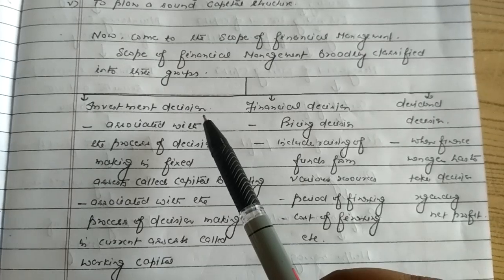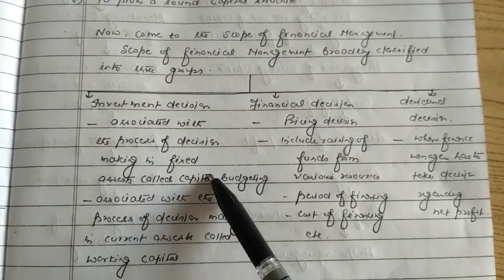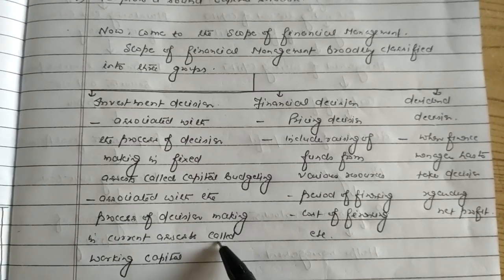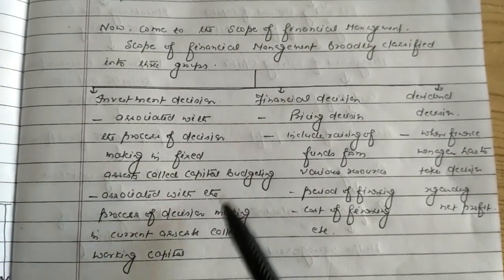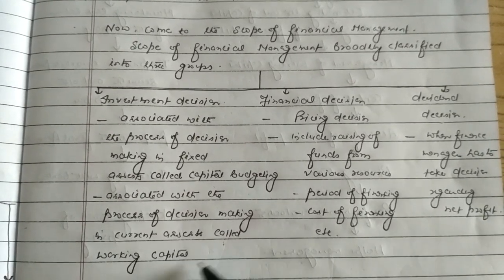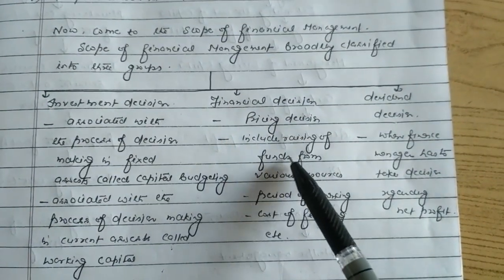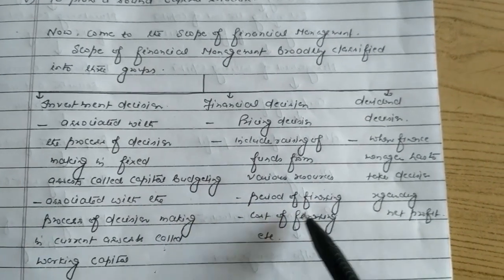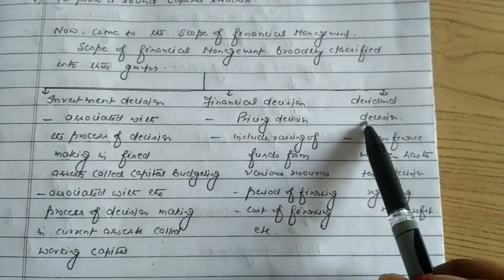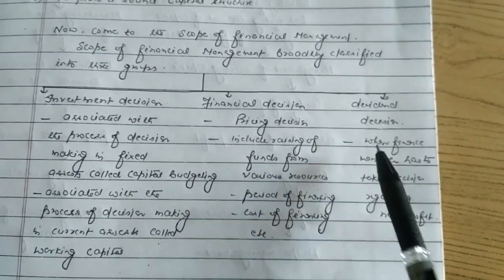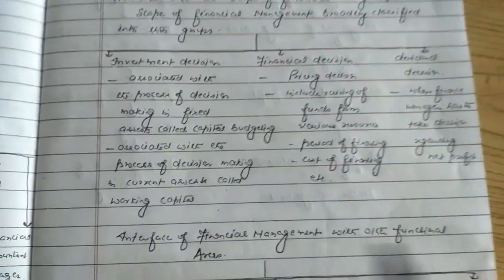Investment decision is associated with investment in fixed assets or investment in current assets. If we are taking an investment decision for fixed assets, that is called capital budgeting. In financial decision, there are pricing decisions including raising of funds from various resources, periods of financing, and cost of financing. In dividend decision, it is associated with net profit — the work of financial management is to take decisions regarding net profit.